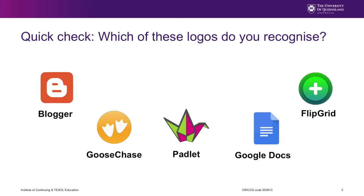That one up on the right of the screen is Blogger, a blogging tool you can use to get your students producing written language outside the classroom. Goose Chase is one I'll be sharing today. The one in the middle is Padlet. That's not OneNote — it's their competitor, not Microsoft, but Google Docs. And the final one is Flipgrid. I won't be talking about all of these today. I'll be focusing on three: Goose Chase, Padlet, and Flipgrid.